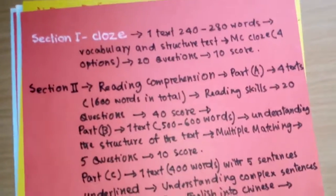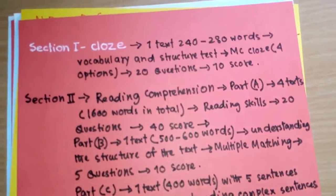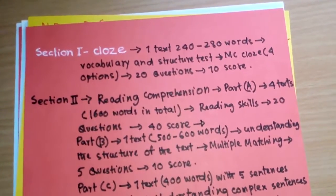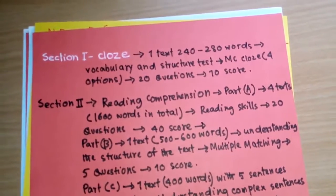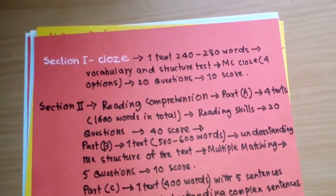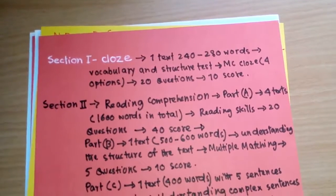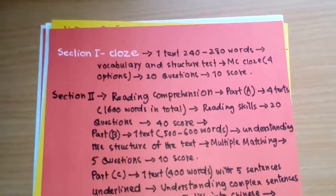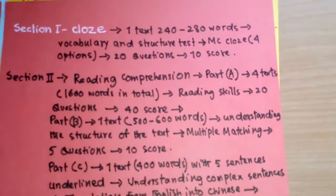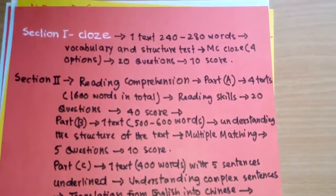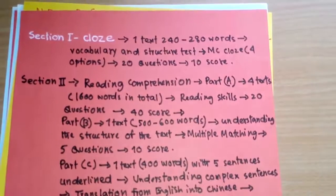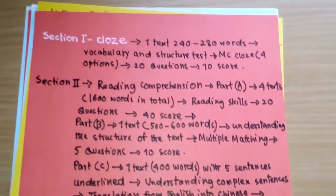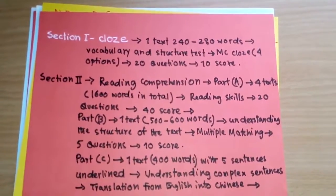Section 1: Cloze test, 240 to 280 words, vocabulary and structure, multiple choice with four options, 20 questions, 10 marks. Section 2 Part A: four texts totaling 1,600 words, reading skills, 20 questions, 40 marks. Part B: one text of 500 to 600 words.